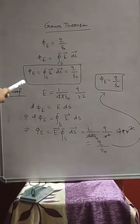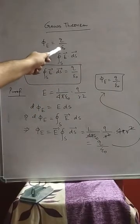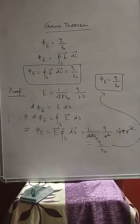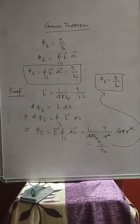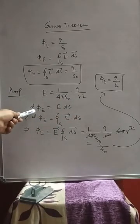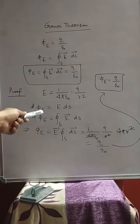To prove Gauss's theorem, you have to prove φ_E = q/ε₀; the part φ_E = ∮ E·dS was not proposed by Gauss — it comes from the basic definition of flux. Flux is the number of field lines passing through a cross-sectional area. Since electric field lines always form closed surfaces, we write flux as the closed surface integral of E·dS.